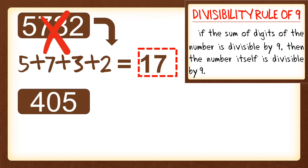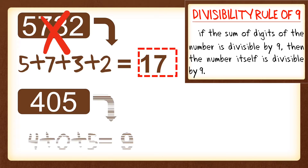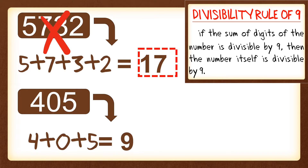Next, I have here 405. Get the sum of the digits: 4 plus 0 plus 5 equals 9.